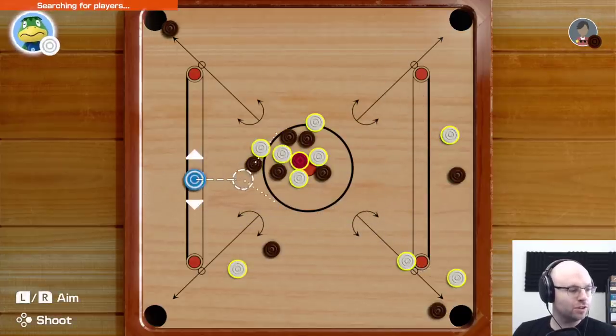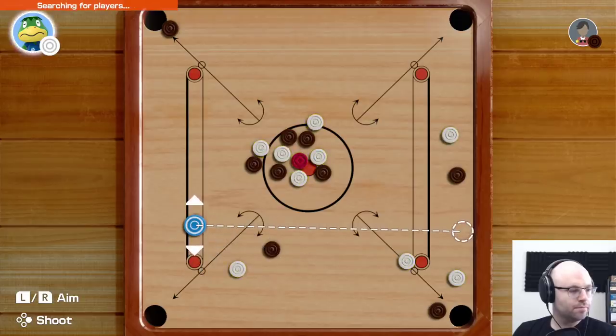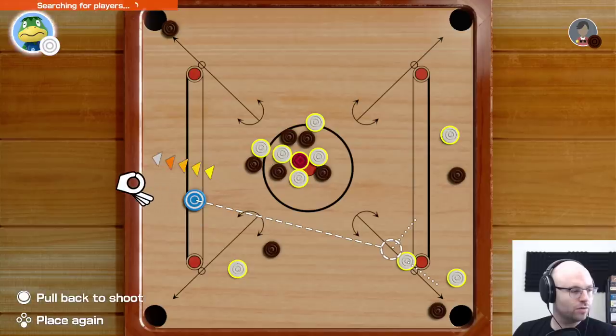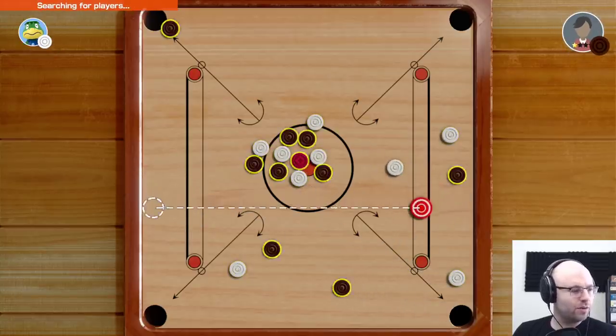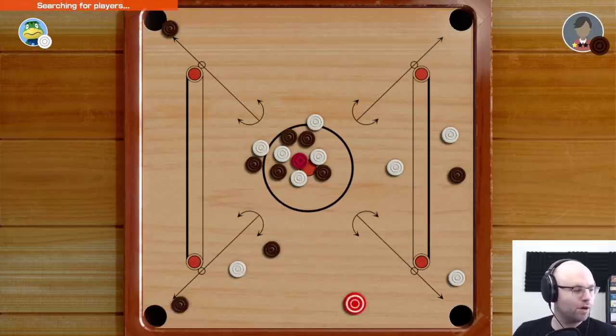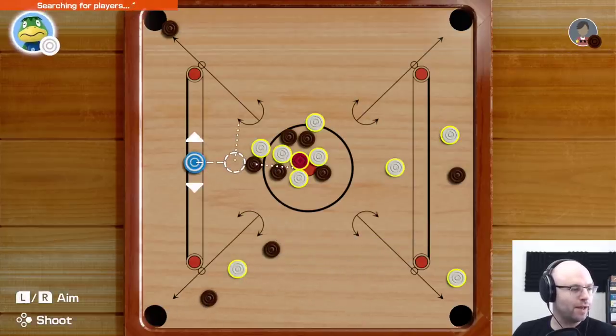So you try to flick these checkers into the hole. And if you succeed, you win. If you get the most checkers in the hole. Actually, I think it's if you get your checkers in the hole first. This is not a good approximation of my Carrom ability. I promise you that. But the AI is also bad, thankfully.